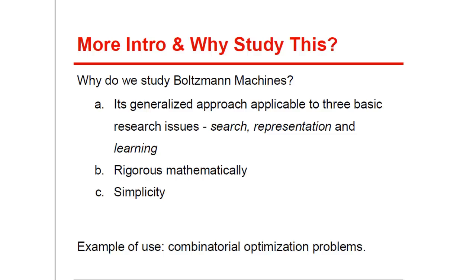What's the purpose of studying Boltzmann machines? Academics would say there are three main reasons. Firstly, Boltzmann machines exhibit a generalized approach applicable to three basic research issues in neural computing: search, representation, and learning. Then, there is the rigorous mathematical formalism of the model, which allows us to construct a simple learning algorithm suited for both supervised and unsupervised learning. Lastly, the simplicity of the model makes it easy to put directly onto silicon. We can also encounter Boltzmann machines in solving combinatorial optimization problems.